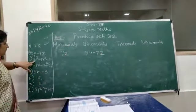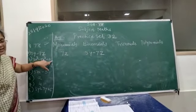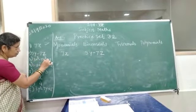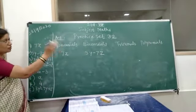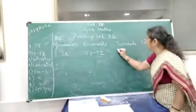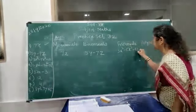Now if you see the third one, 3x cube minus 5x square minus 11. So how many terms are there? 1, 2, 3. So this is a trinomial. So I am writing it over here. 3x cube minus 5x square minus 11.